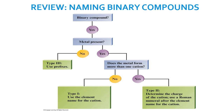To summarize naming binary compounds: is there a metal present? If no metal is present, use prefixes — it's a Type 3 covalent compound. If a metal is present, ask: does the metal form more than one cation? If no, it's Type 1 — use the element name for the cation. If yes, it's Type 2 — use Roman numerals after the element name of the cation.